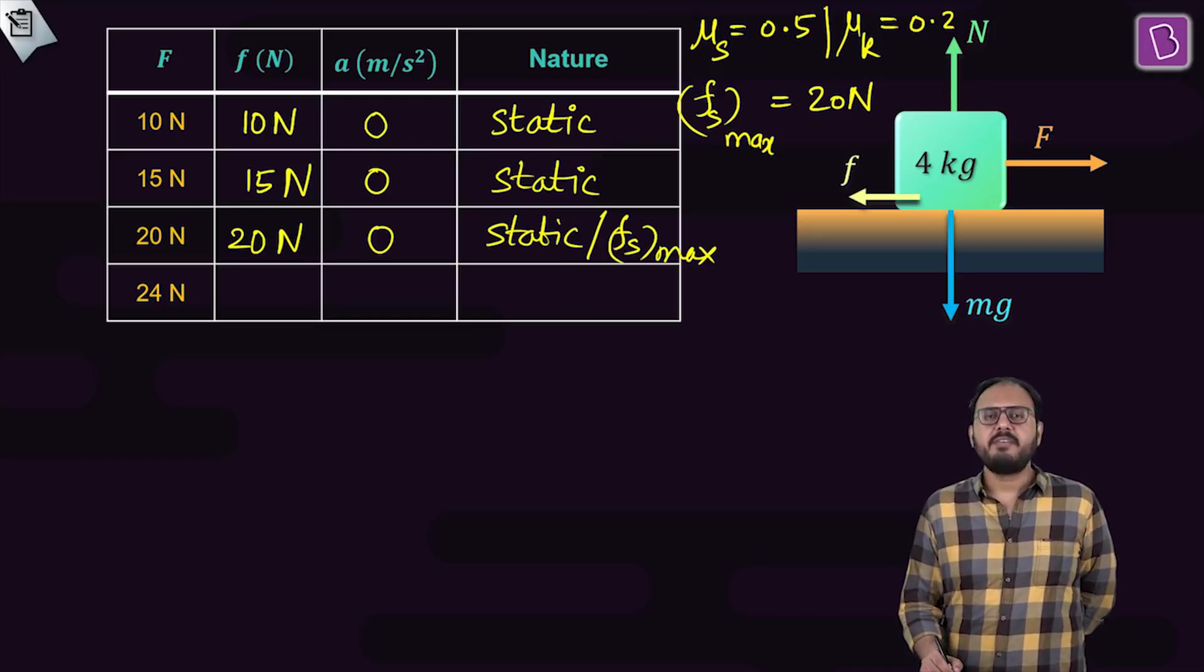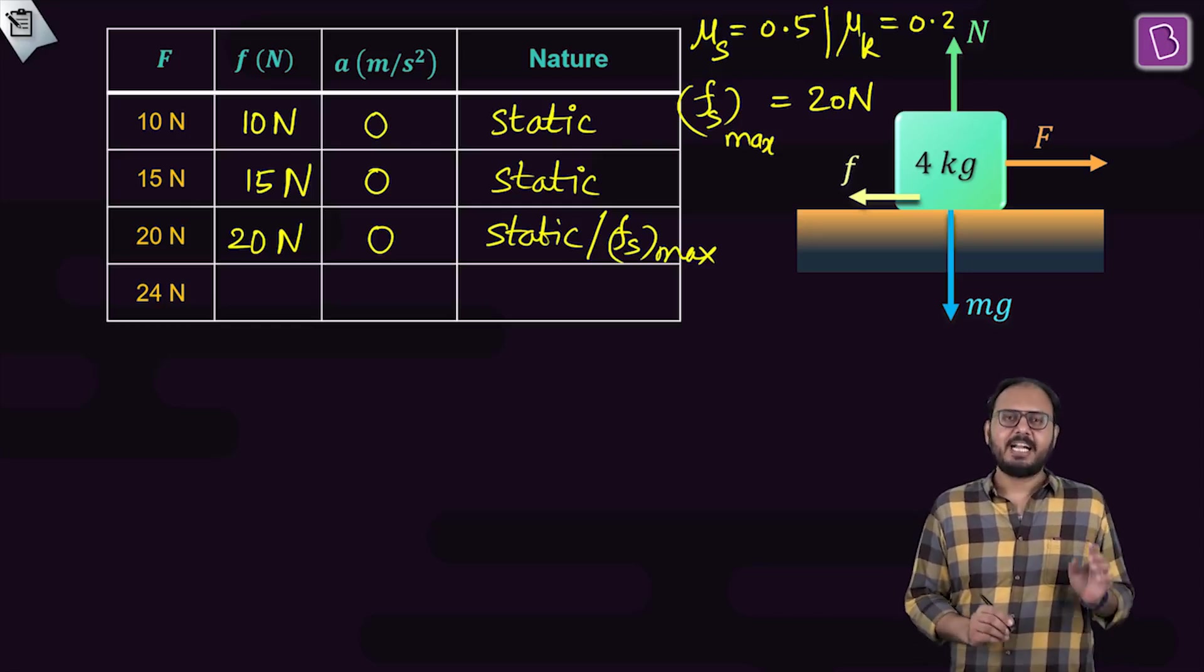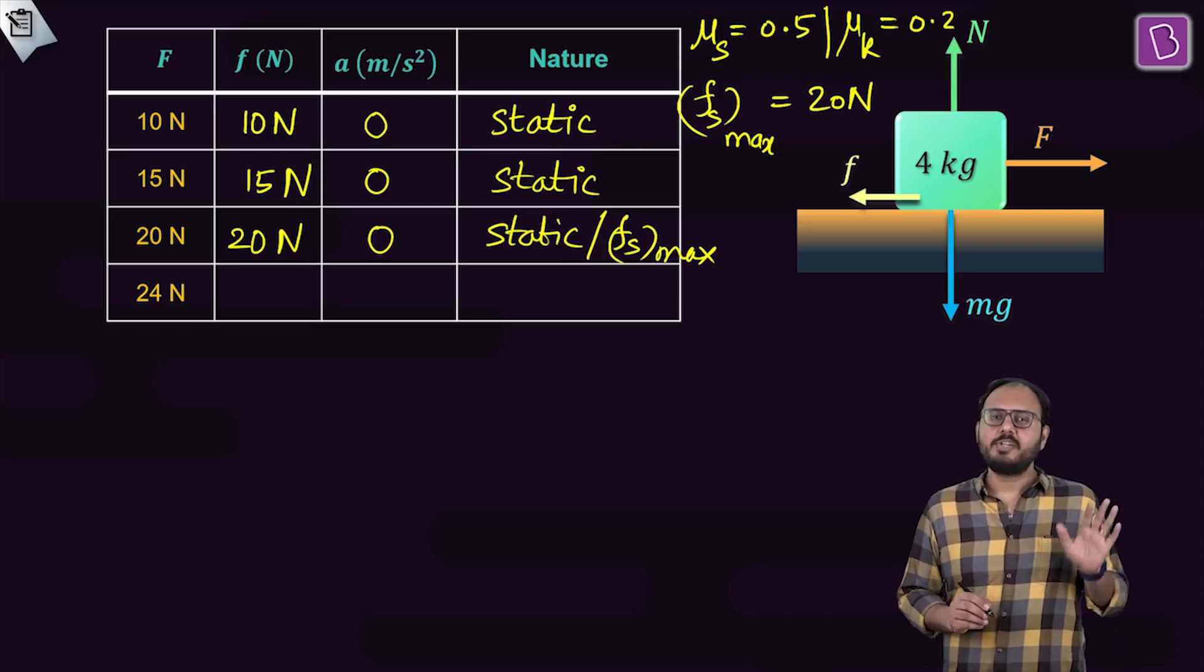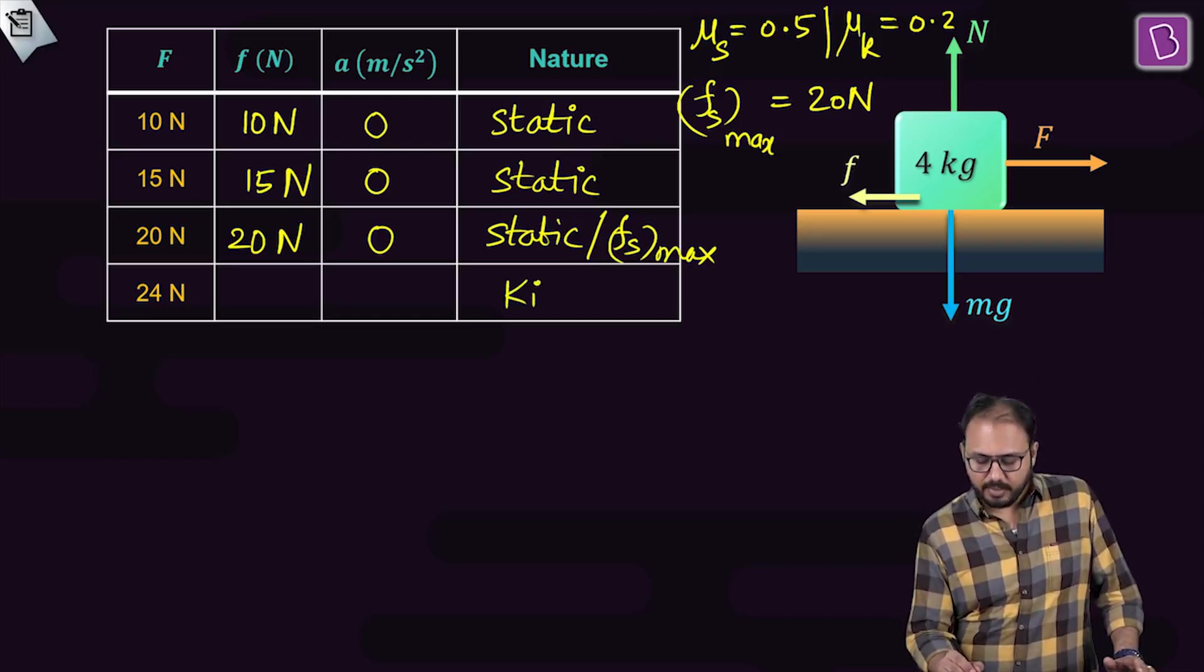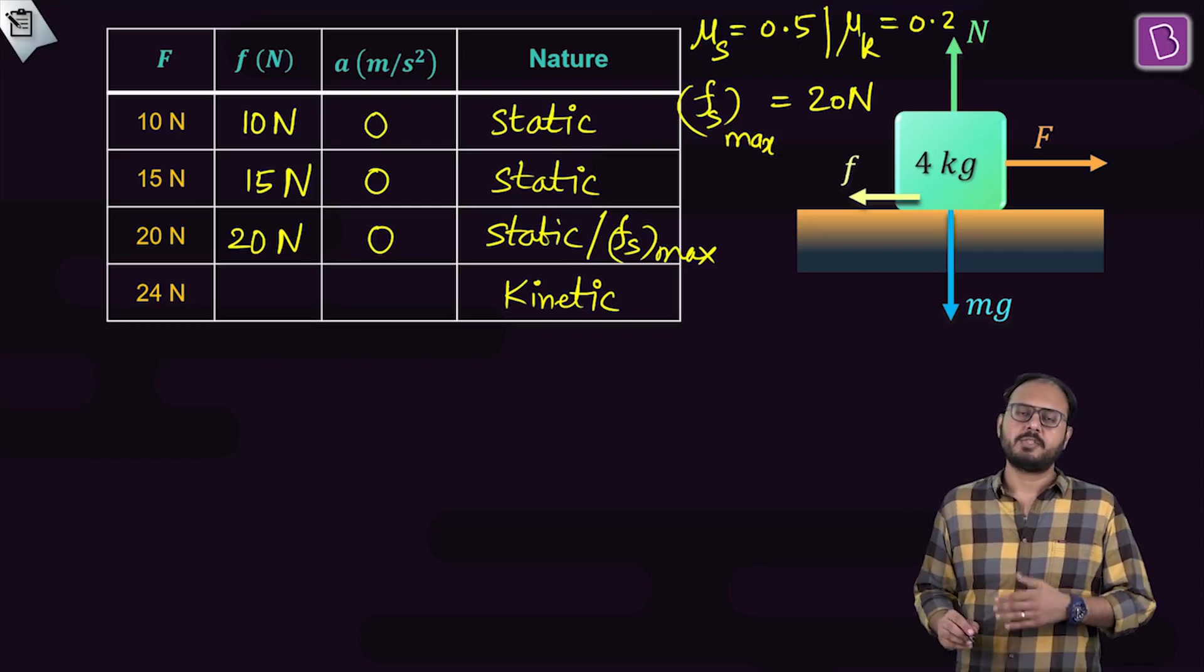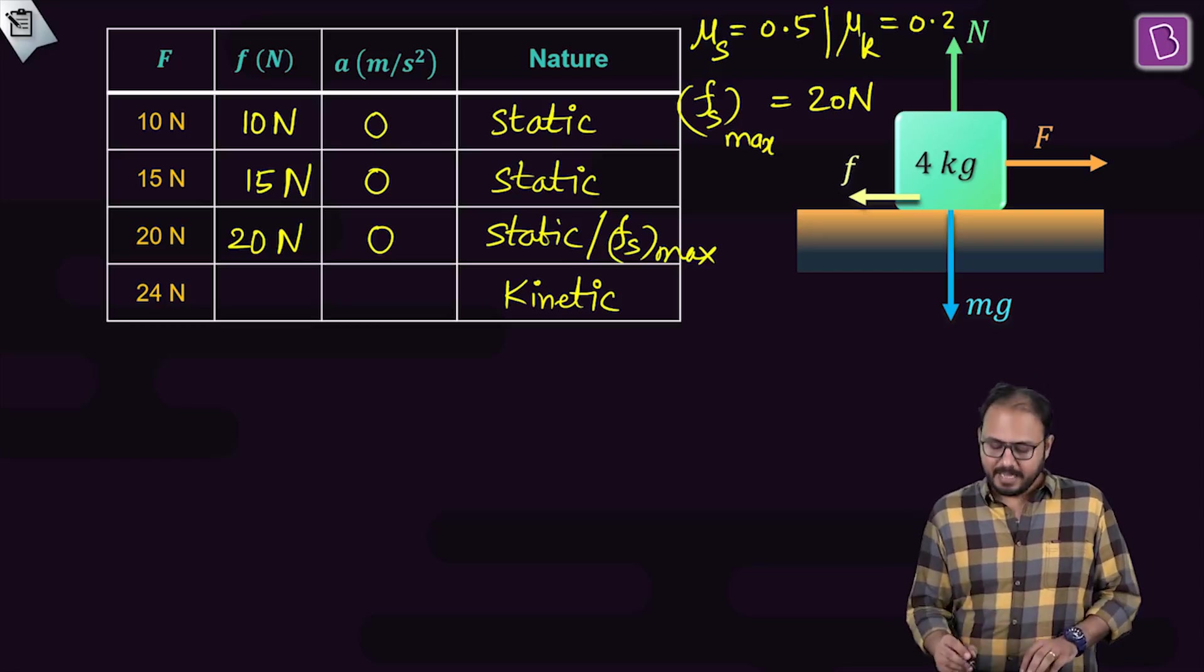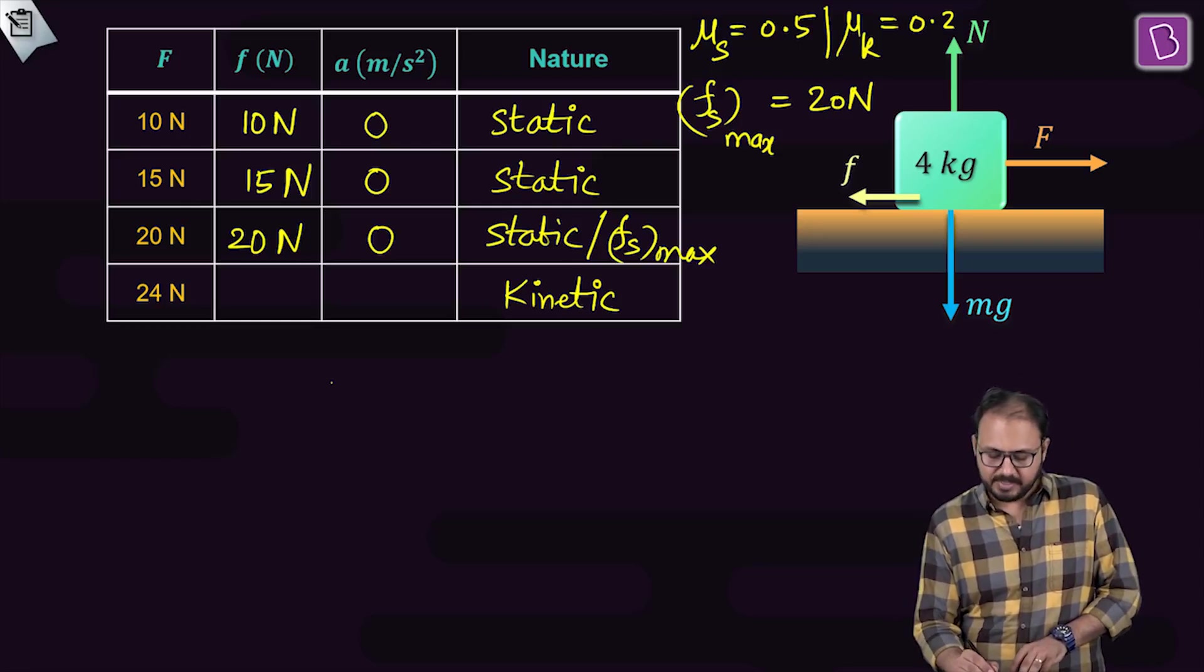Guys, in 24 newton, the problem is that the friction is still 20. That means the motion will start. The first thing I know is that the nature of friction now is kinetic. So f becomes fk and there will be an acceleration. How do I find out that acceleration? Very simple.